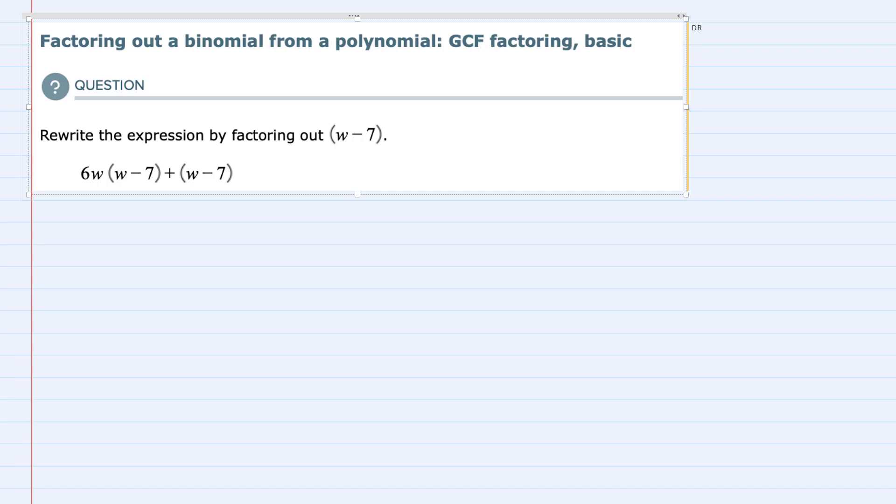In this video, I'll be helping you with the Alex problem called Factoring Out a Binomial from a Polynomial, Greatest Common Factor Factoring, Basic. We're asked to rewrite the expression by factoring out (w - 7).